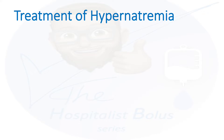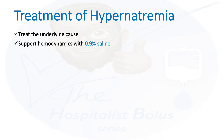The first thing is of course to treat the underlying cause — figure out what's causing it and try to treat it, whether it be iatrogenic, diabetes insipidus, or GI losses. Then, if the patient is hemodynamically unstable, you have to support hemodynamics by giving normal saline to maintain blood pressure, circulation, and heart rate for normal tissue perfusion.